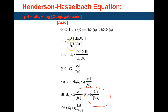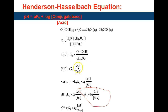If you cross-multiply — bringing the acid concentration to the numerator side on the other side — you get Ka times the acid concentration divided by the conjugate base concentration, solving for H3O+. So H3O+ equals Ka times the acid concentration divided by the conjugate base, or the salt concentration.